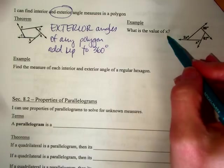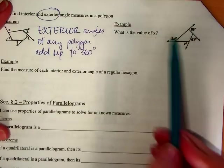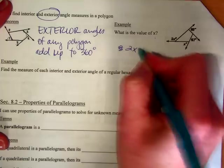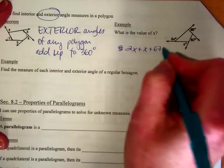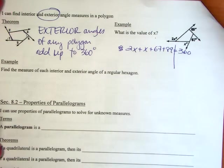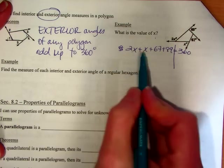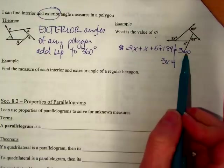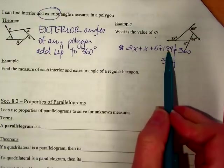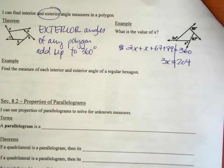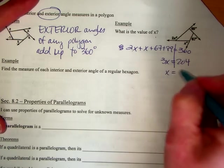So the first one says let's solve for x. So I'm going to take all these angles and add them up and equal 360. 2x and an x and 67 and 89 equals 360. And just combining that, 2x and x makes 3x. And I'm going to move these guys over. So 360 minus 89 minus 67 leaves me 204. And if I divide that by 3, I get 68.